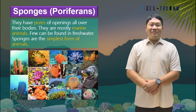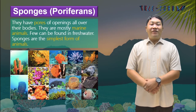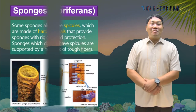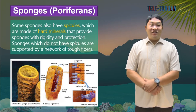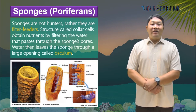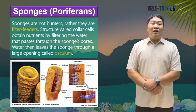The first classification are the sponges, also called porifera. They have pores or openings all over their bodies and are mostly marine animals, though a few can be found in fresh water. Sponges are the simplest form of animals and spend their lives attached to rocks or underwater surfaces. Some sponges have spicules made of hard minerals that provide rigidity and protection, while those without spicules are supported by a network of tough fibers. Sponges are not hunters but filter feeders — collar cells obtain nutrients by filtering water that passes through their pores, and water then leaves through a large opening called the osculum.